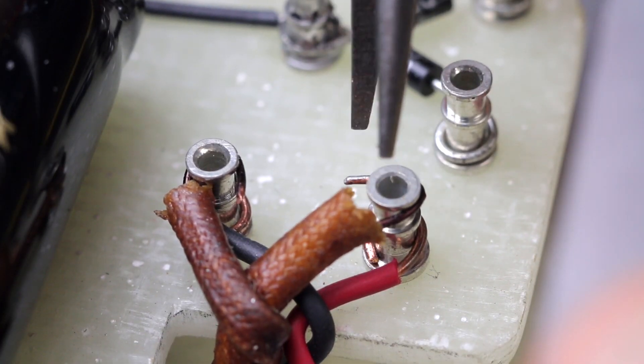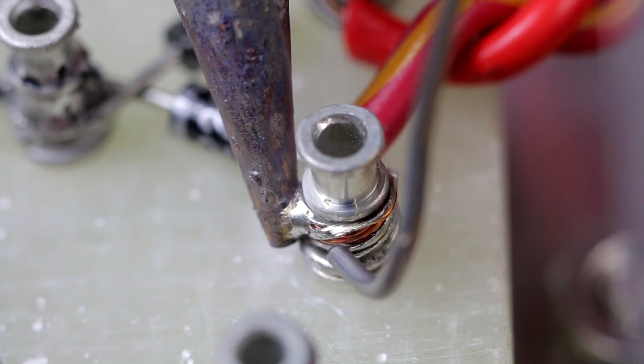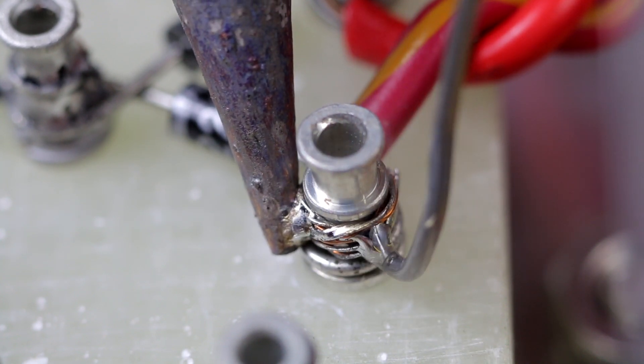These are the 6.3 volt filament windings, and they are the first cables that I attach to the turret board.